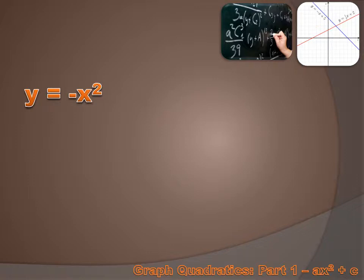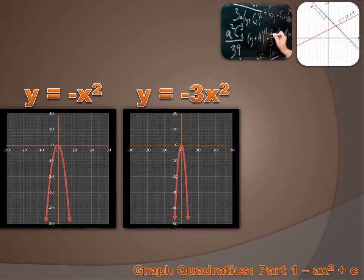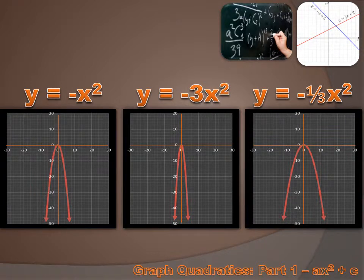What would happen if instead of the parent function y equals x squared, we had y equals minus x squared — multiplying x squared by negative one? By multiplying the x squared values by negative one, we're making y values that are negative. So if our a value is negative, our graph is going to point downward instead of upward. Changes to a will have the same impact as before, except the graph continues to face downward. If our a value were minus three, we get vertical stretch and a narrower parabola. If our a value were minus one-third, we get vertical shrink and a wider parabola.